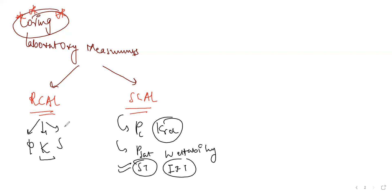Together, RCAL and SCAL properties help you determine three key things: how much quantity is present, how much of that quantity can flow, and how it will flow. These three questions summarize the entire value chain of the reservoir engineering workflow.